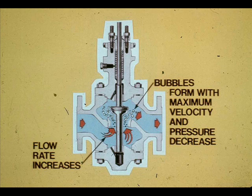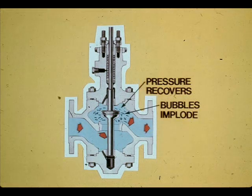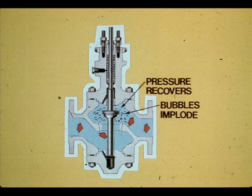Cavitation occurs in a control valve due to the pressure drop and pressure recovery inside the valve. The pressure drop causes the liquid to accelerate. The liquid pressure lowers and vaporization begins, thus forming vapor bubbles. The liquid then decelerates, the pressure builds back up, and the bubbles suddenly collapse, causing implosions.